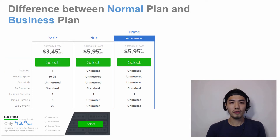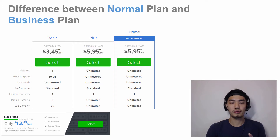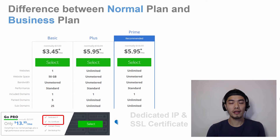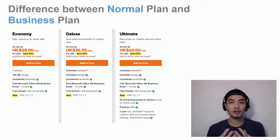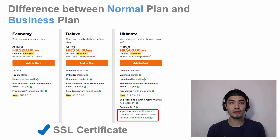For Bluehost, they have the plus plan and the prime, which is the upgrade, and the GoPro. The additional features provided by the GoPro plan are the dedicated IP address and the SSL certificate. While for GoDaddy in the ultimate plan, they provide the additional feature of an SSL certificate.